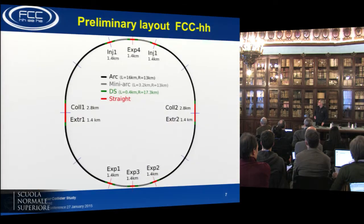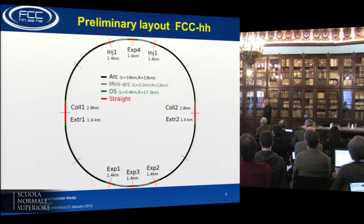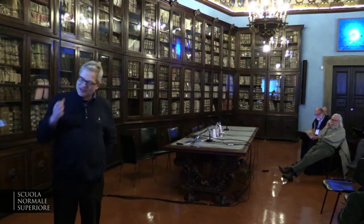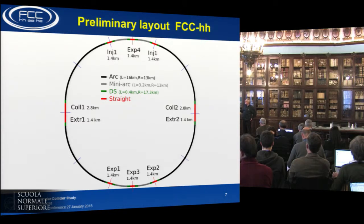There will be a presentation at IPAC. Based on geological considerations, a preliminary layout was produced for the FCC-HH. It's not a perfect circle but has a racetrack-like shape with two long straight sections, each used for collimation and beam extraction. Collimation needs a much longer distance than the experimental insertions. There are four experiments: one main experiment on each side, and then two special-purpose experiments — looking very similar to the LHC layout.